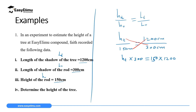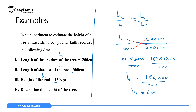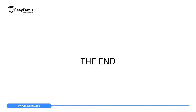Dividing both sides by 300: HT = (150 × 1200) / 300 = 180,000 / 300 = 600 centimeters. Working in centimeters throughout, the height of the tree is 600 centimeters. That marks the end of our lesson today. In the next lesson we will discuss a derived quantity called area.